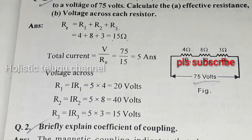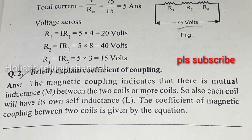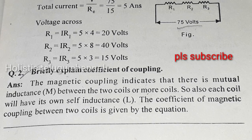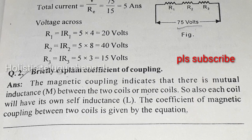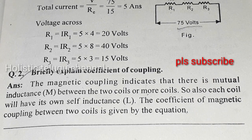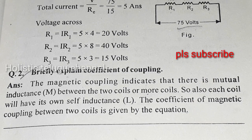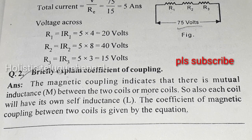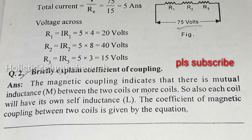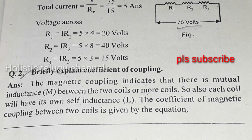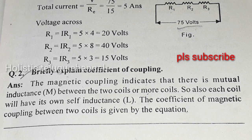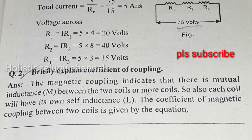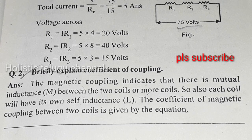Next, it is very important to briefly explain the coefficient of coupling. The magnetic coupling indicates that there is mutual inductance M between two or more coils. Each coil will also have its own self-inductance. The coefficient of magnetic coupling between two coils is given by the following equation.